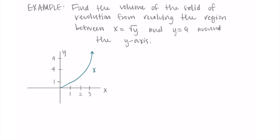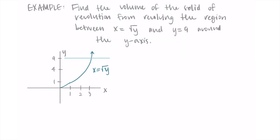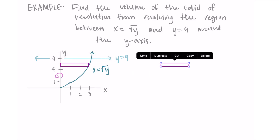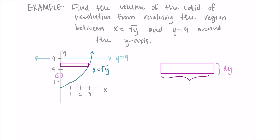So this is the graph of x = √y, and we're going from this point up to y = 9, which is just the horizontal line at 9. We're taking this area and revolving it around the y-axis. I like to draw in little rectangles to represent the discs. This rectangle has width dy, and its radius is just the distance from the axis out to the function — that's specifically √y.